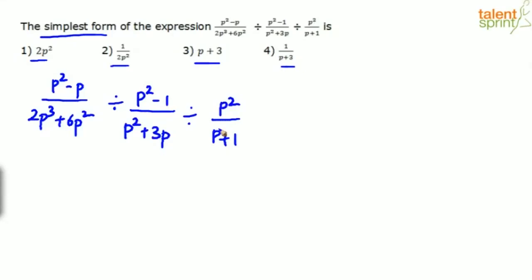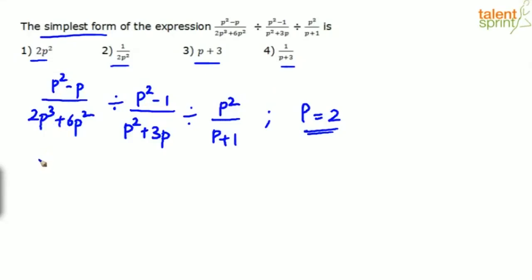A smart student would substitute a value for p, simplify, and check which option matches. Let's substitute p = 2. We avoid p = 1 because 1 - 1 = 0 leads to undefined values. So substitute p = 2: the numerator of the first term is 2² - 2 = 4 - 2 = 2. The denominator is 2·2³ + 2² = 16 + 4 = 20... wait — 2·2·2³ = 16, plus 6·2·2² = 24.